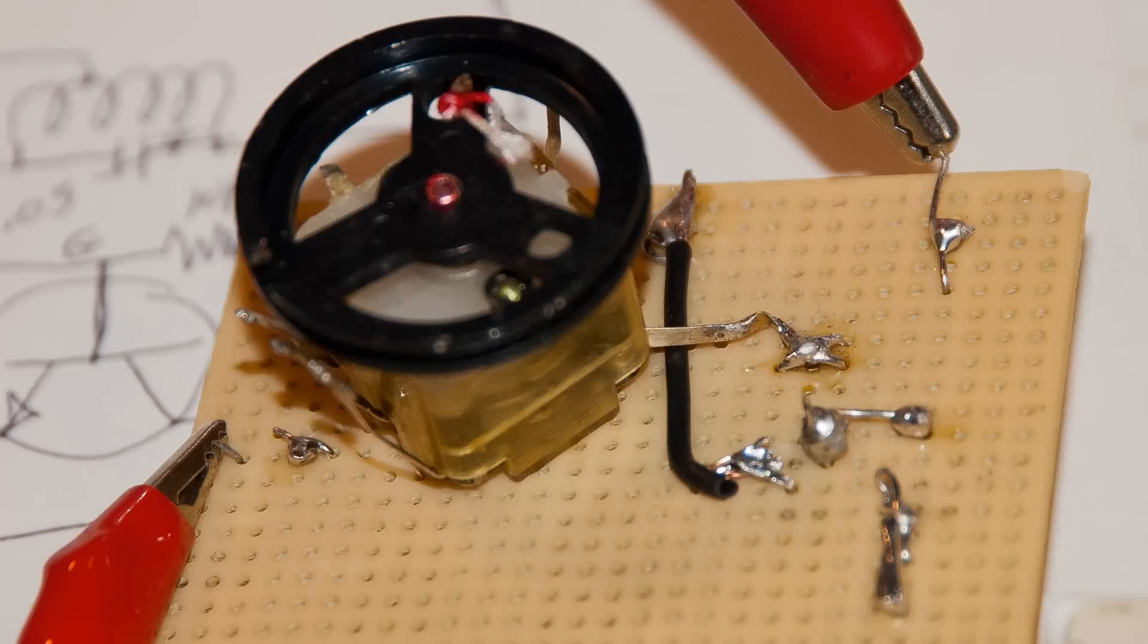Doing it this way ensures that those leads of the tank circuit are as short as possible. And I got that variable capacitor from a junker transistor radio.